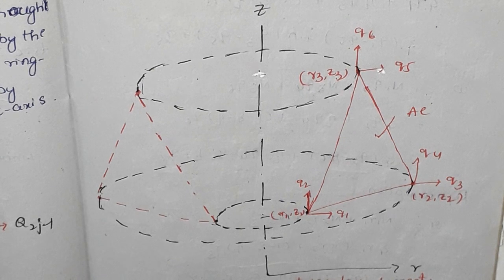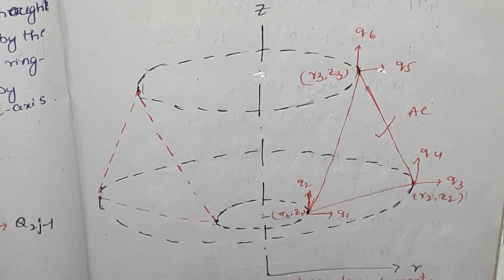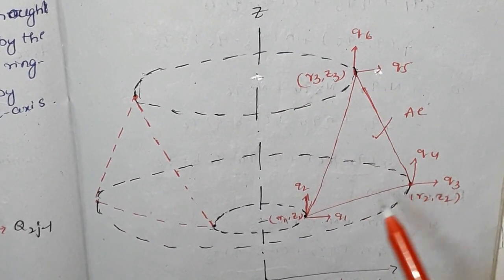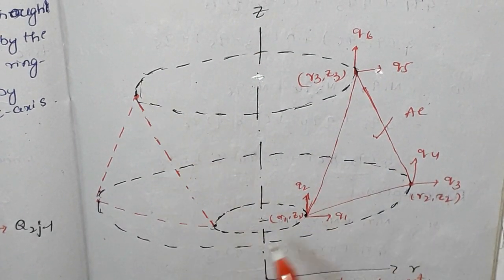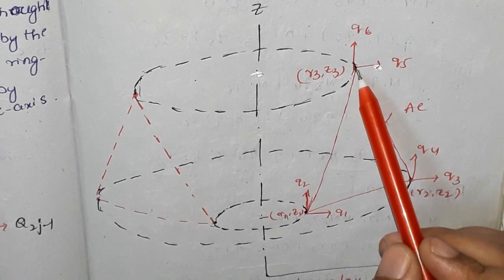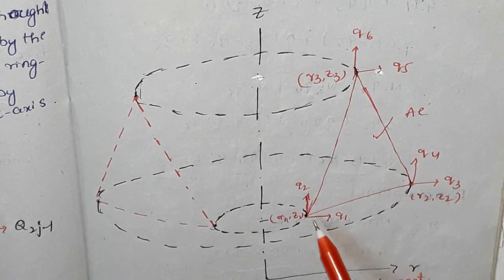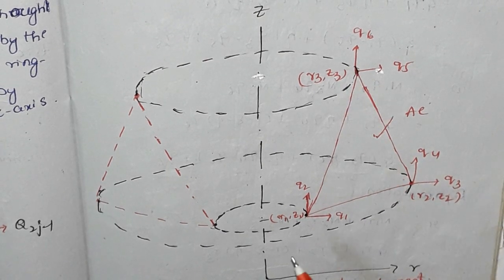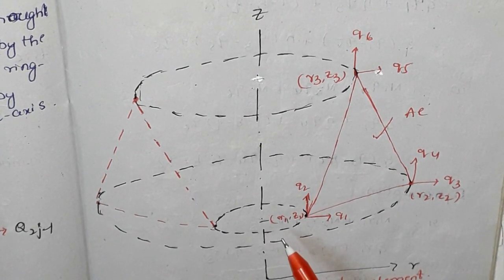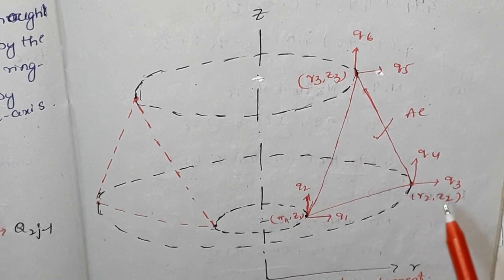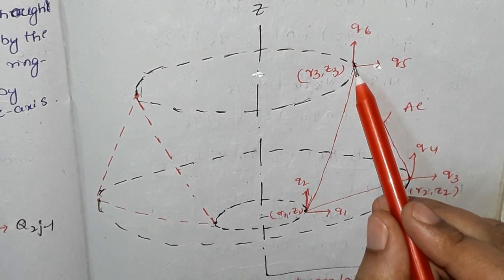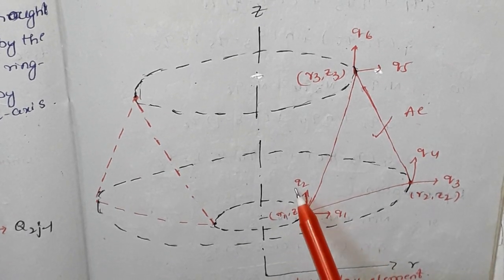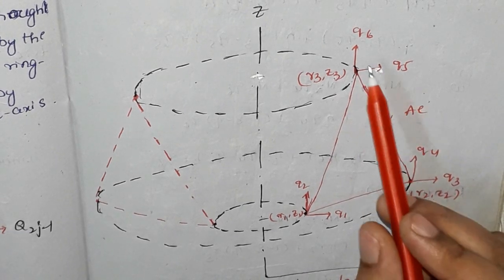Using the three shape functions N1, N2, and N3, we define U = N1·Q1 + N2·Q3 + N3·Q5. For the tapered axisymmetric section revolving along the Z direction, we consider three nodes. Node 1 has coordinates R1, Z1; node 2 has R2, Z2; node 3 has R3, Z3. The displacements are two-dimensional: node 1 has Q1, Q2; node 2 has Q3, Q4; node 3 has Q5, Q6.